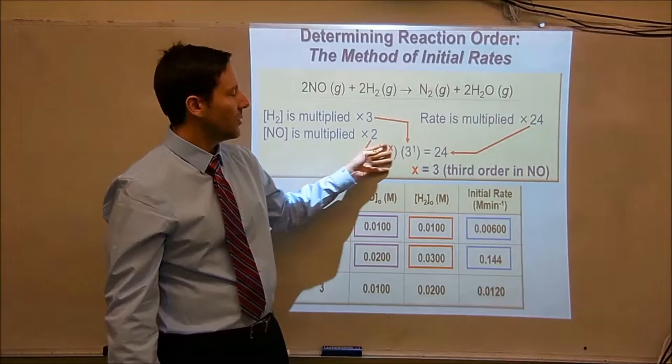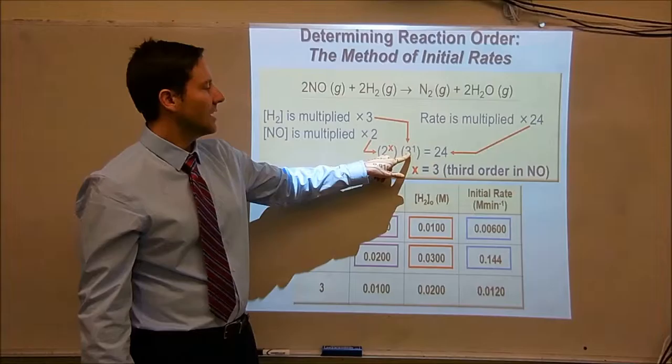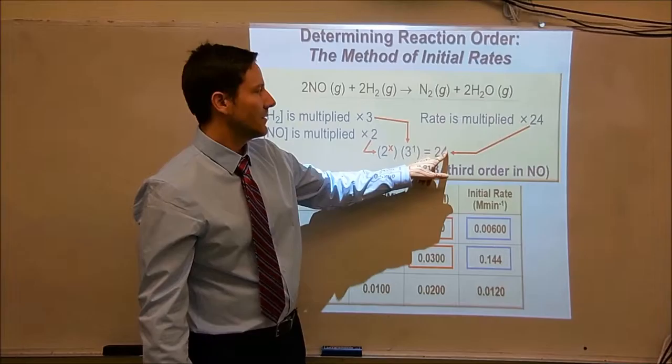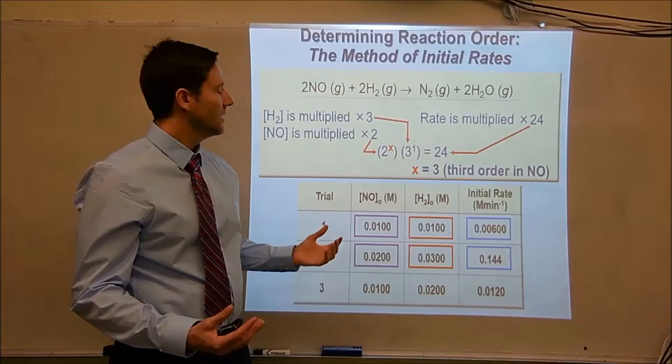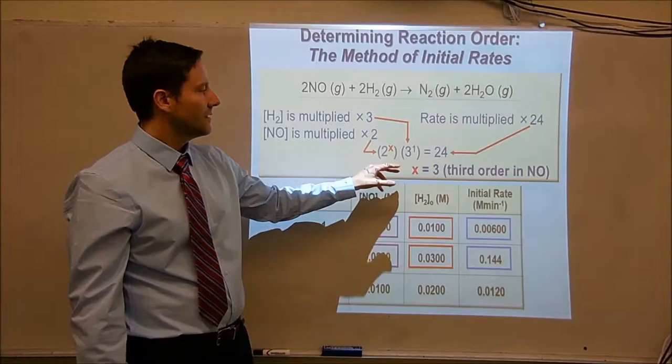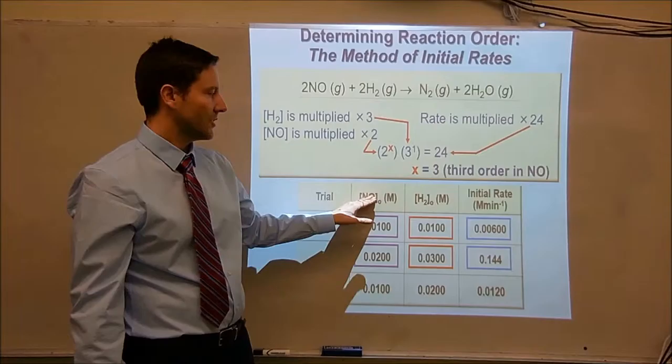Using the same kind of process we used for figuring out the order of hydrogen: nitric oxide was doubled to whatever order it is, times hydrogen was tripled and we know it's first order, equals the factor by which the initial rate increased. So two to the x times three to the first gives you 24. Solve for x — x is three. Two to the third is eight, times three is 24. So this reaction is third order in nitric oxide.